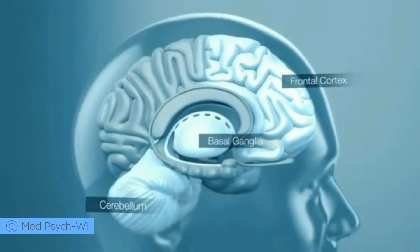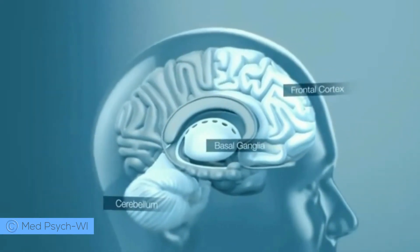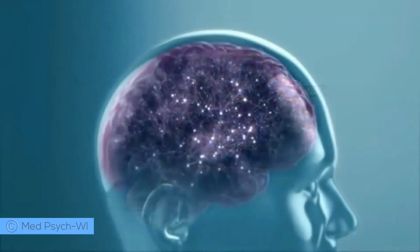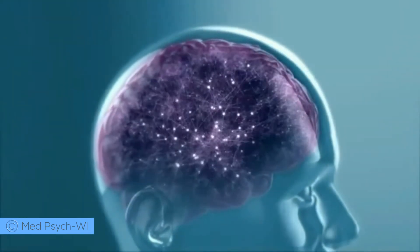These different parts of the brain do not operate in isolation, but interact extensively to form networks controlling functions such as language, attention, and movement.